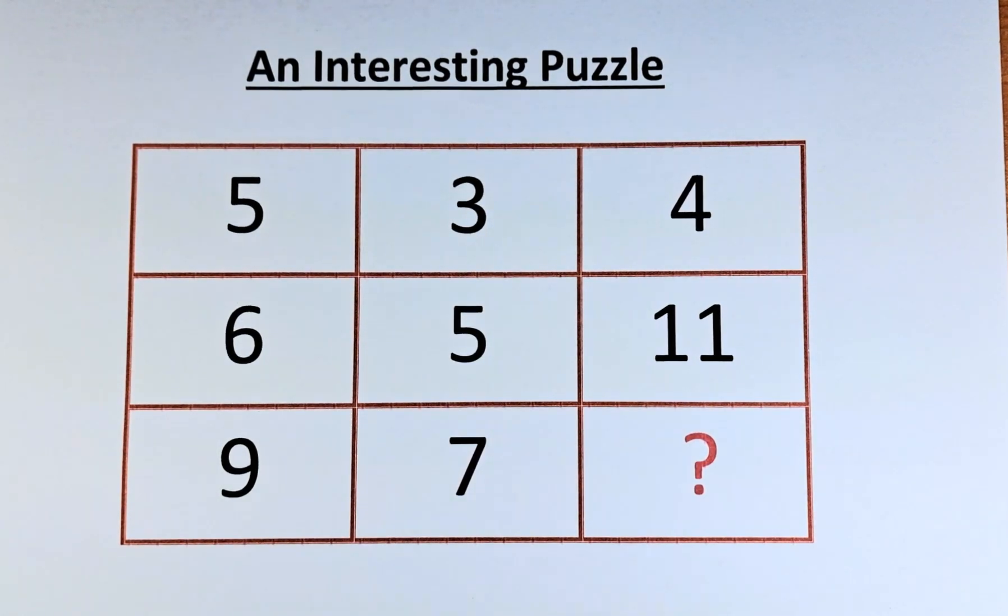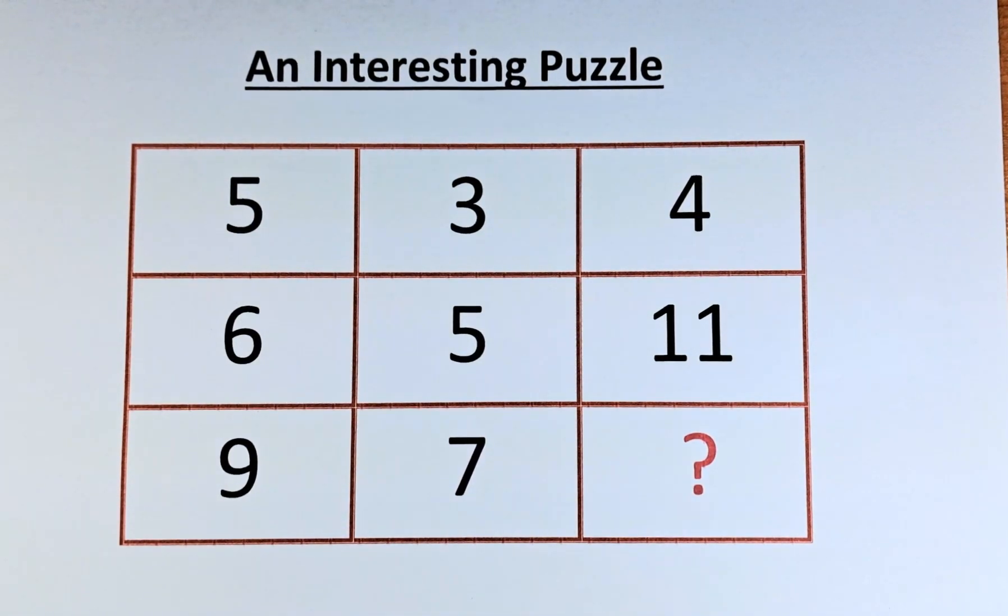In the second row, we have 6, 5 and 11. And in the final row, we have 9, 7 and the question mark.